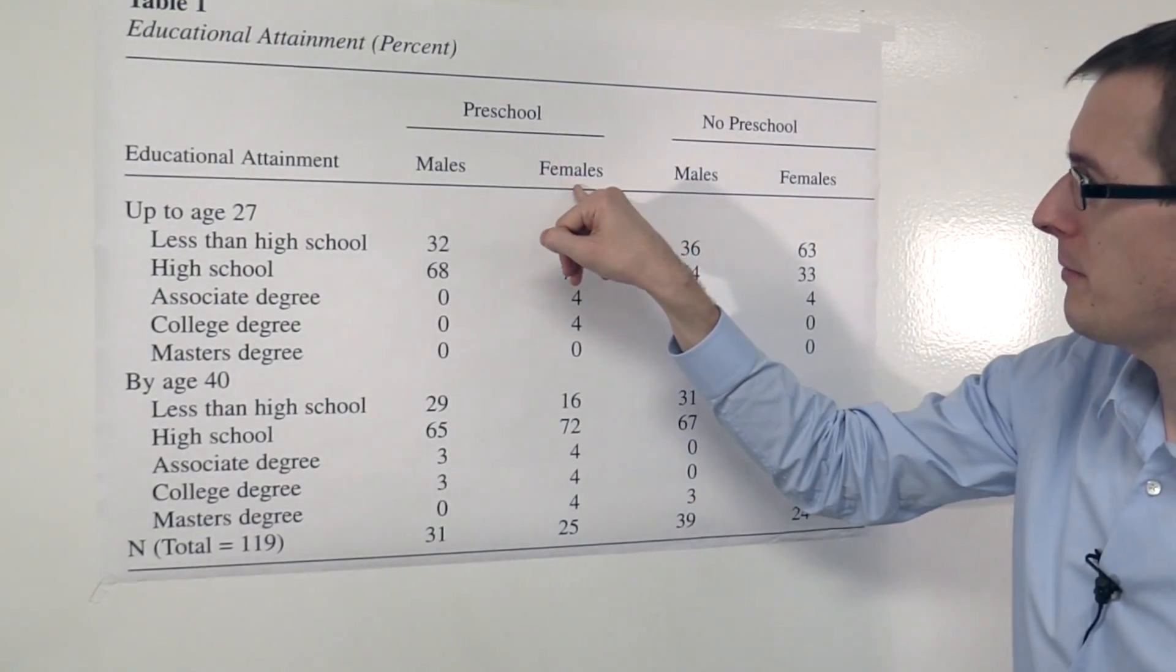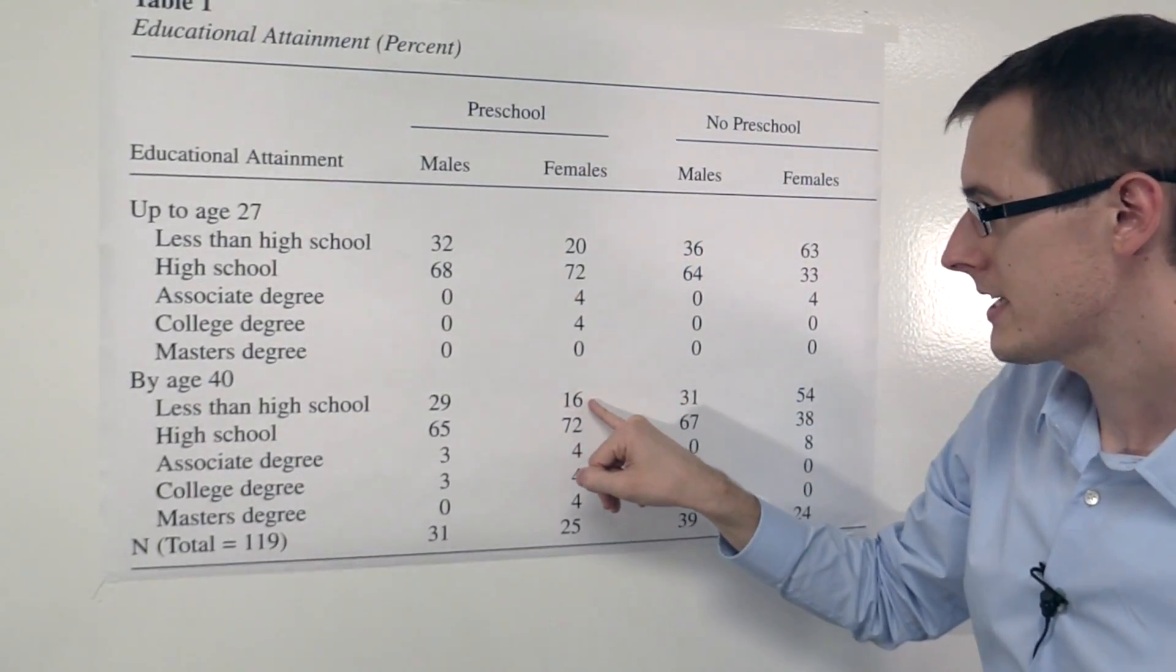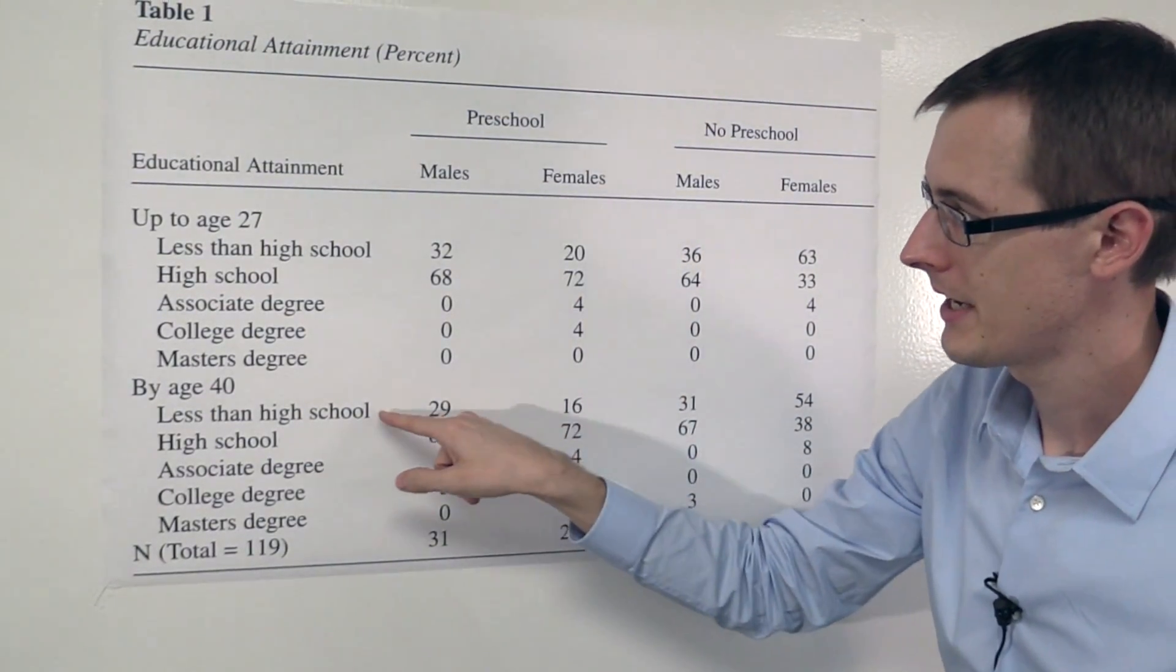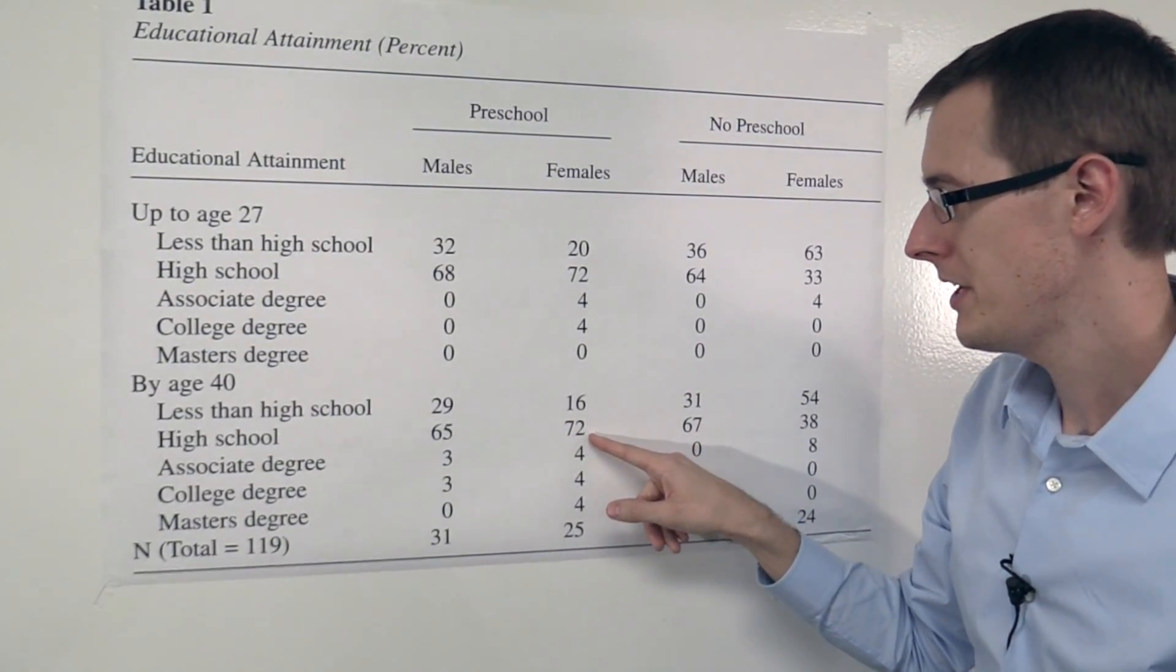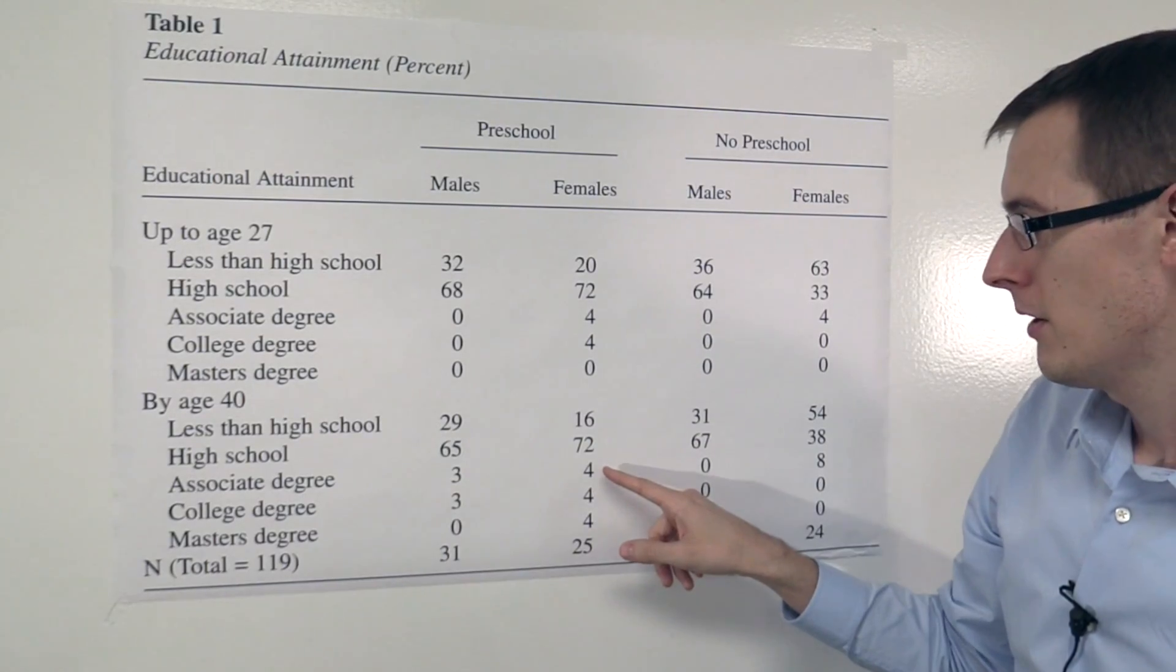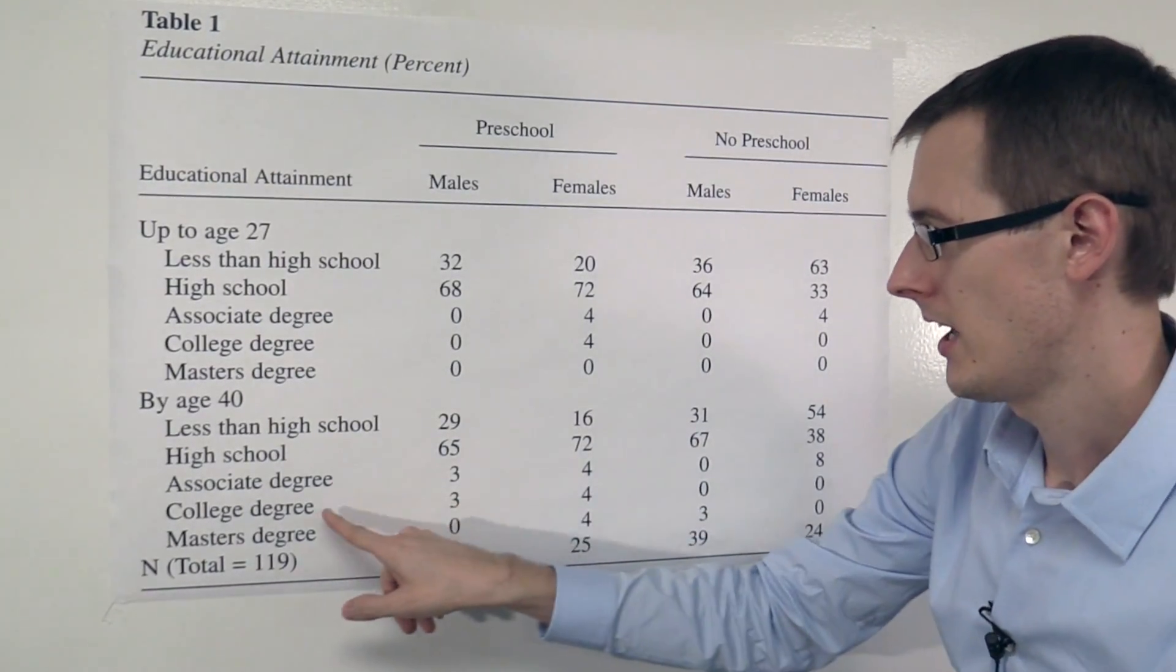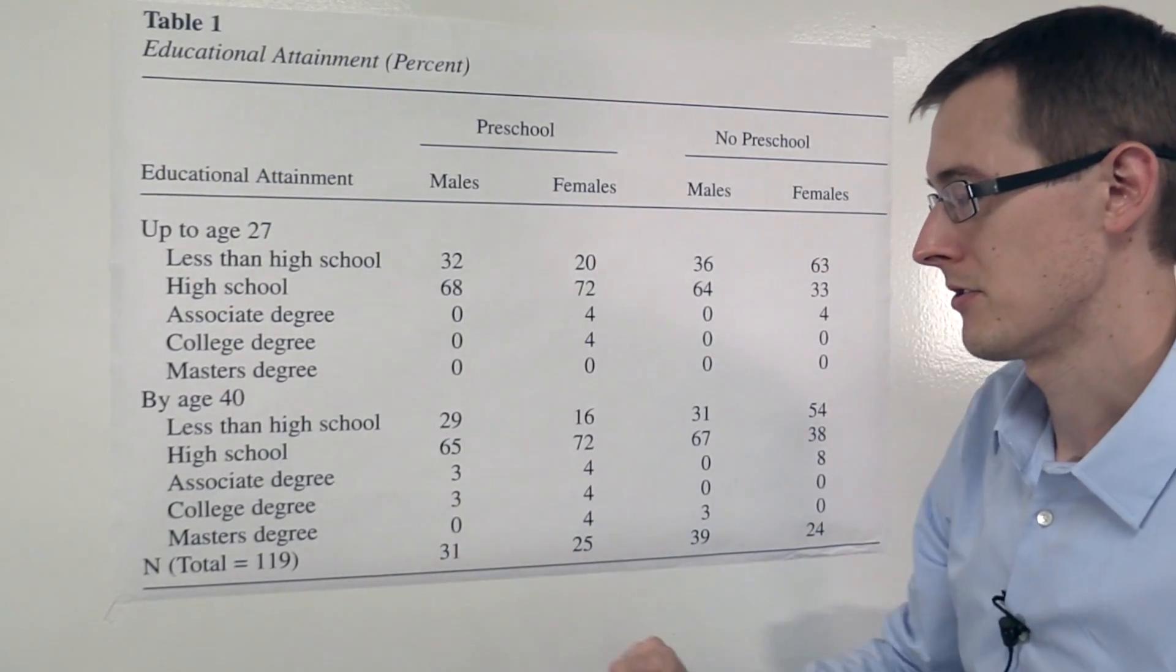So for females who got preschool in the treatment group, 16% of them got less than high school by the time they were 40, 72% had a high school education by the time they were 40, 4% had an associate degree, 4% had a college degree, and 4% had a master's degree.